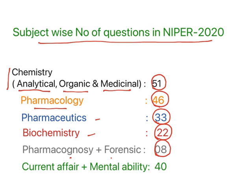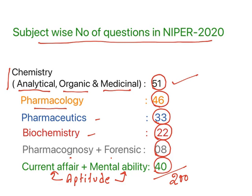Pharmacognosy and forensics together have 8 questions. General aptitude — which includes current affairs and mental ability — has 40 questions. So in total there are 200 questions. The major subjects are chemistry (51), pharmacology (46), pharmaceutics (33), biochemistry (22), and aptitude (40). This is the analysis for NIPER 2020.